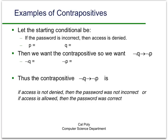In class, we'll go into this in a lot more detail. But let me give you an example of the contrapositive so you can have some practice with what it might mean and how things work. Start with the conditional statement: 'If the password is incorrect, then access is denied.' What is P — the premise — and what is Q — the conclusion? The premise P is 'the password is incorrect,' and the conclusion Q is 'access is denied.'